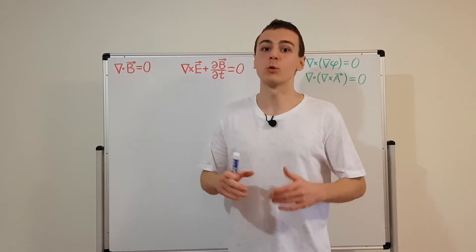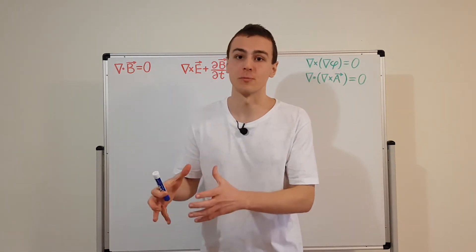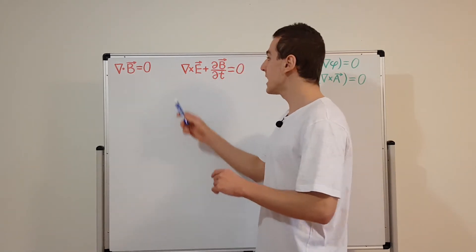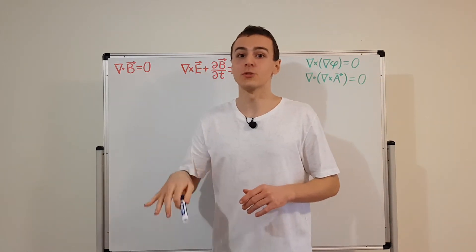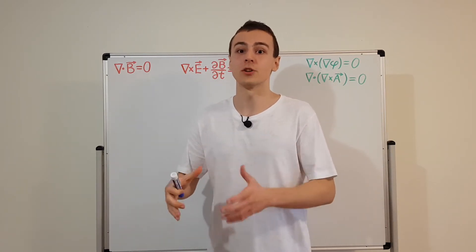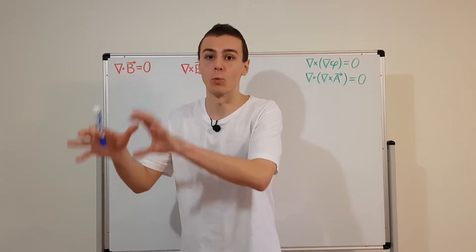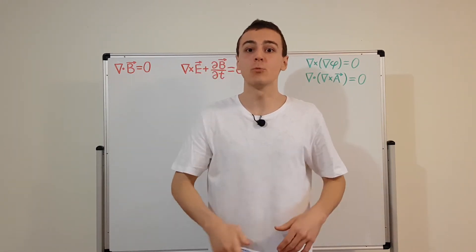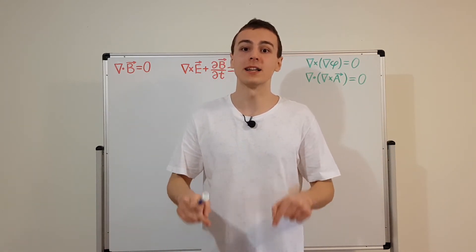If you have a rho or a vector quantity j, then you would have a source term. But these two of Maxwell's equations do not have source terms — there's only electric and magnetic fields. The other two Maxwell's equations do have source terms, making them inhomogeneous differential equations, and we'll be using those in the next few videos in the electromagnetism playlist.